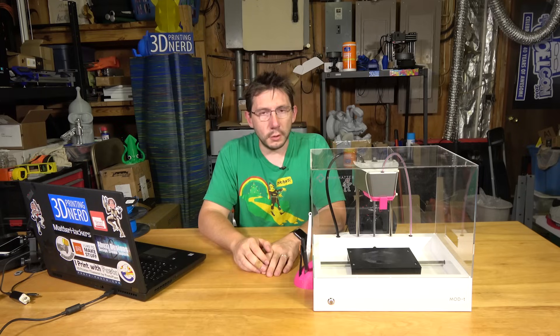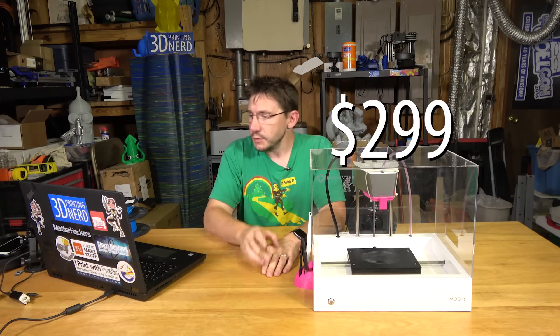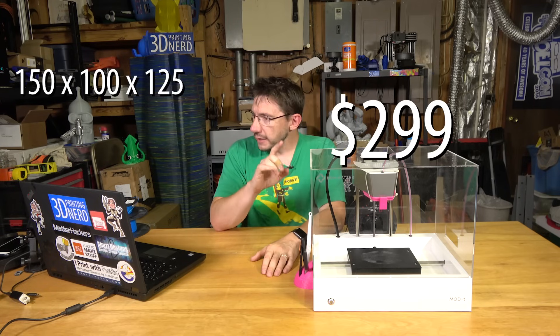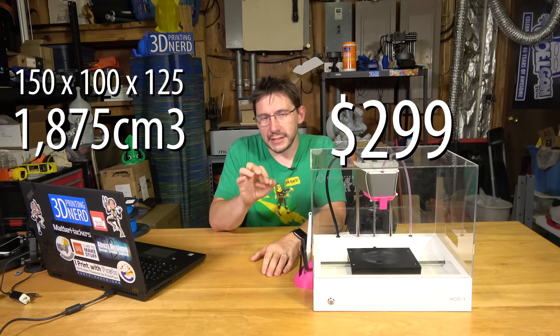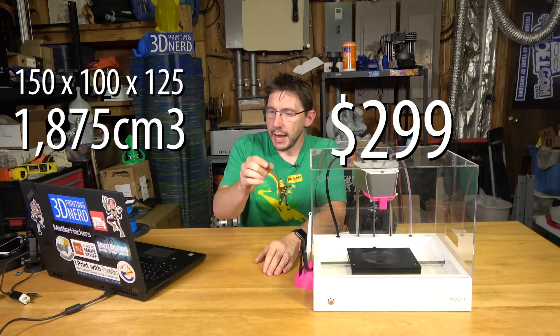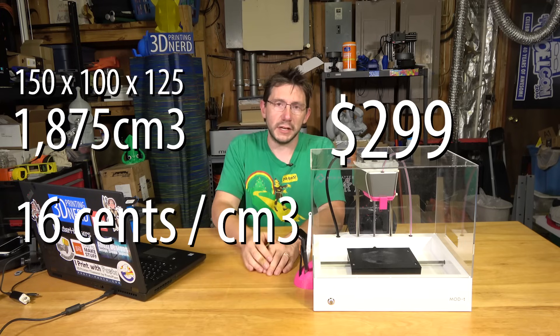Let's drill down on the price just a little bit. The Numatter Mod-T is $299. It's $150 on the X, $100 on the Y and $125 on the Z. That gives you 1,875 cubic centimeters of build area and at $299 that is $0.16 per cubic centimeter.